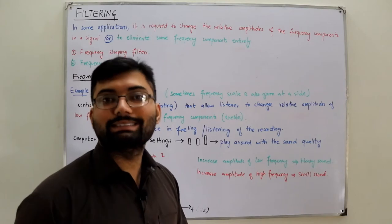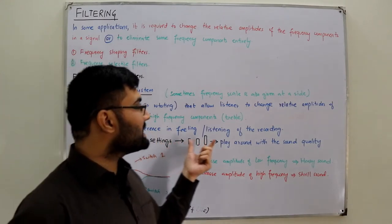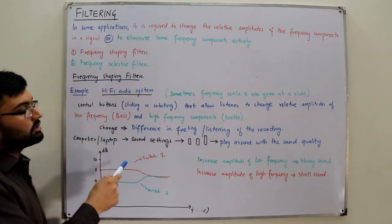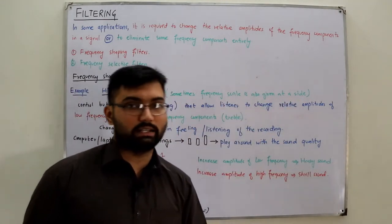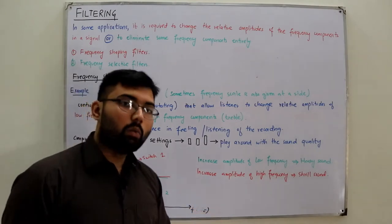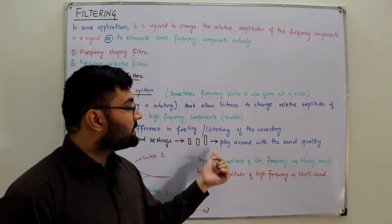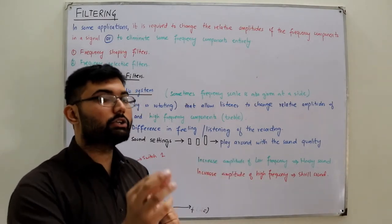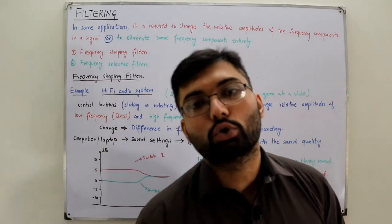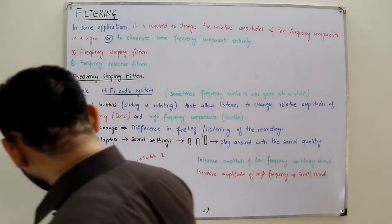By changing the relative amplitudes of low and high frequency components, you change the sound quality — you make the sound heavier or thinner. Similarly, on your computer or laptop, in the sound settings you have bar-like graphs representing bass, treble, and volume. Playing with them changes the sound quality; you notice the sound gets heavier, thinner, shrill, and so on.